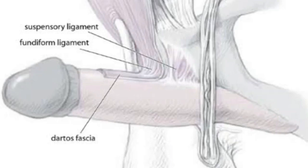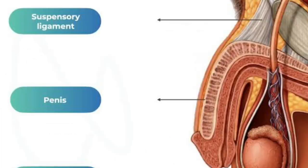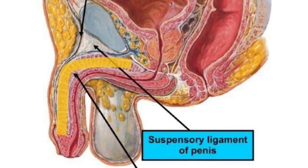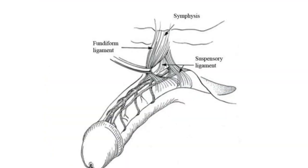The ligaments of the p structure consist of the suspensory ligament and the fundiform ligament. The suspensory ligament is a condensation of deep fascia that arises from the superficial surface of the pubic symphysis. It passes inferiorly and splits to form a sling that is attached to the deep fascia of the p structure at the junction of its root and body. The fibers of the suspensory ligament are short and taut, anchoring the erectile bodies of the p structure to the pubic symphysis.